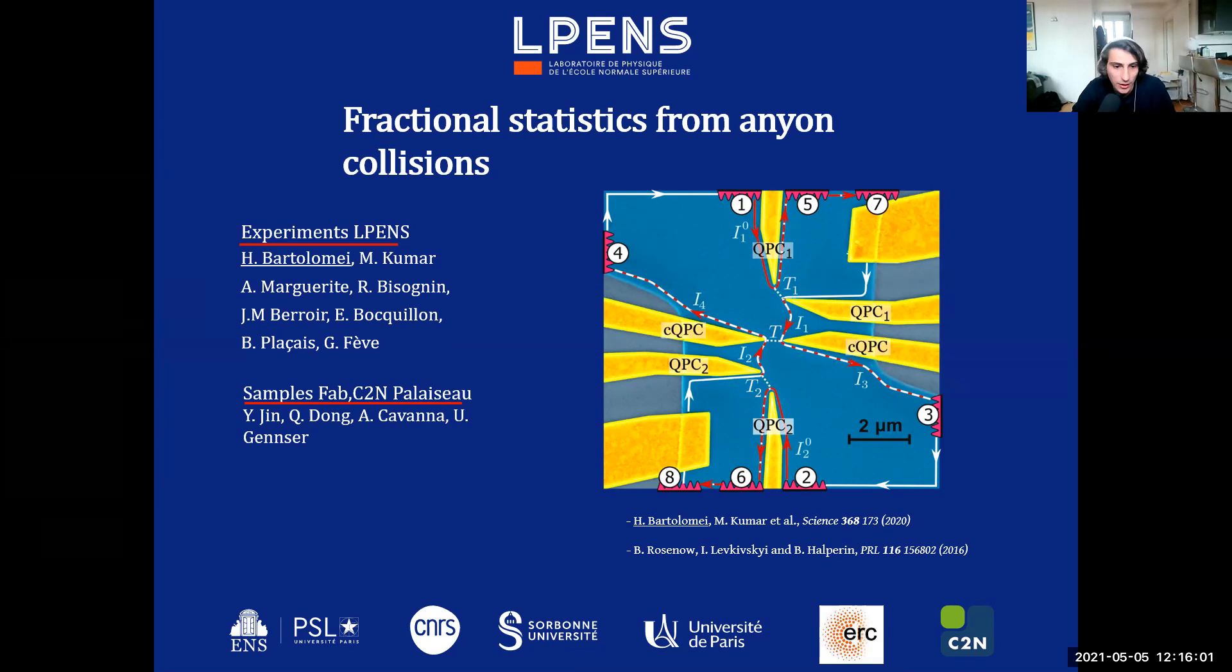The sample comes from a good collaboration with the C2N and are made with gallium arsenide heterostructure. The principle is we want to create a three QPC geometry and we want to use two input QPC to generate two dilute beams of quasi-particles toward a central beam splitter. We can then probe the cross-correlation at the output of this splitter to measure the ability of particles to bunch together or exclude. This can be done both in the integer and fractional quantum Hall effect.